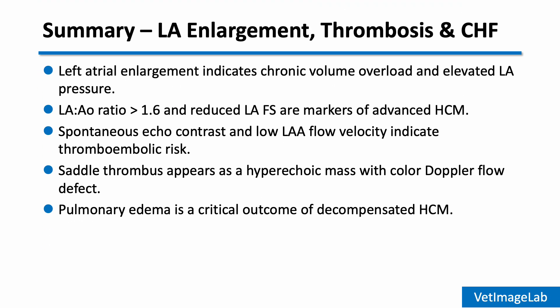Let's wrap up Part 3 with the key points. An LA to AO ratio over 1.6 and reduced LA fractional shortening suggest advanced disease. Spontaneous echo contrast and low LAA flow velocity indicate high thromboembolic risk. A saddle thrombus can be diagnosed by a hyperechoic mass with a Doppler flow defect. And finally, pulmonary edema can be evaluated on radiographs.